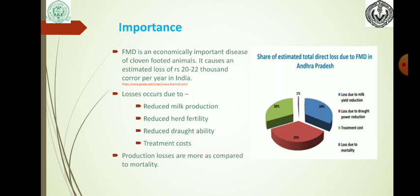FMD is an economically important disease of cloven-hoofed animals. It causes an estimated loss of 20 to 22,000 crores per year in India. Losses occur due to reduced milk production, reduced herd fertility, reduced workability, and treatment cost. Production losses are more as compared to mortality. Share of estimated total direct losses: milk yield reduction 34%, draught power reduction 35%, treatment cost 30%, mortality 1%.